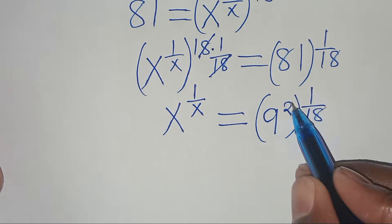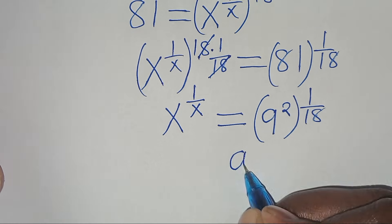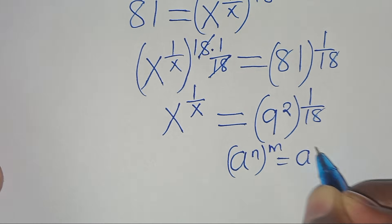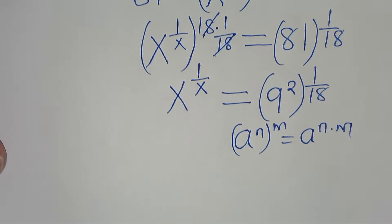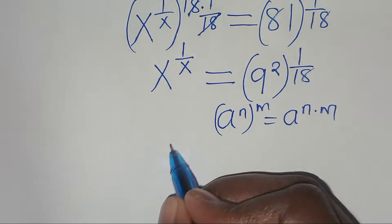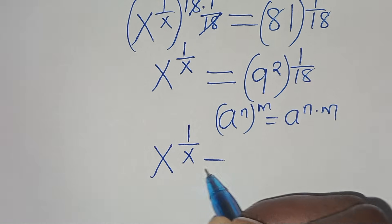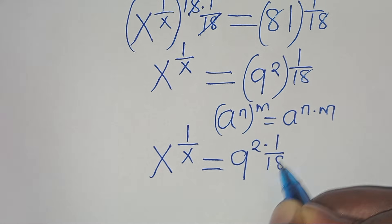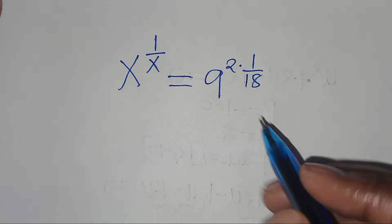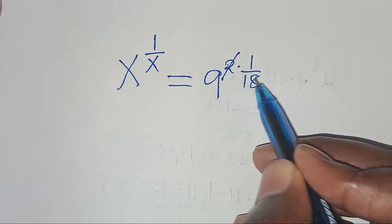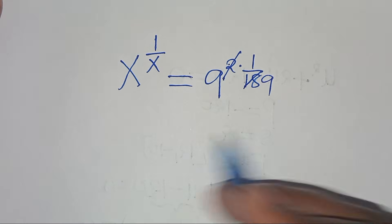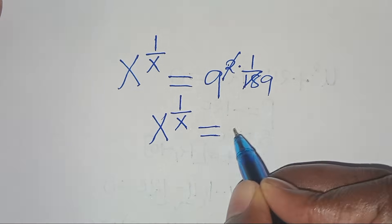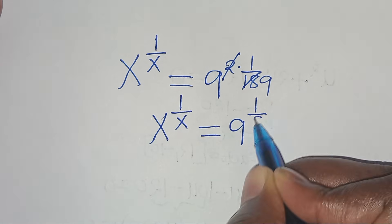So we have 9 to the power of 2, raised to the power of 1 over 18. This is in the form of a to the power of n raised to the power of m, which we can express as a to the power of n times m. So here we have x to the power of 1 over x, this is equal to 9 to the power of 2 times 1 over 18. Simplifying, 2 over 18 reduces to 1 over 9, so we have x to the power of 1 over x equal to 9 to the power of 1 over 9.